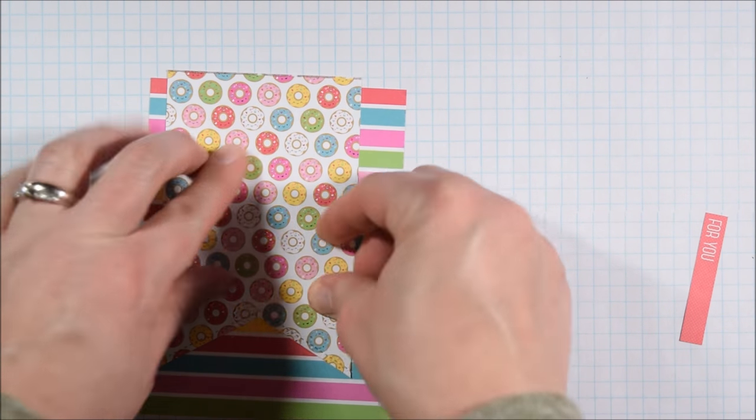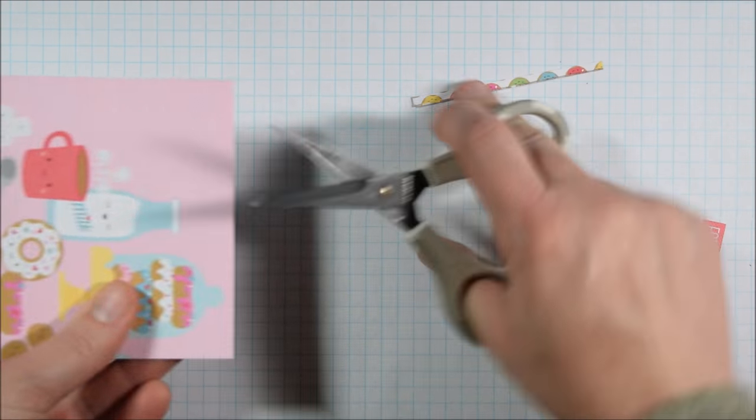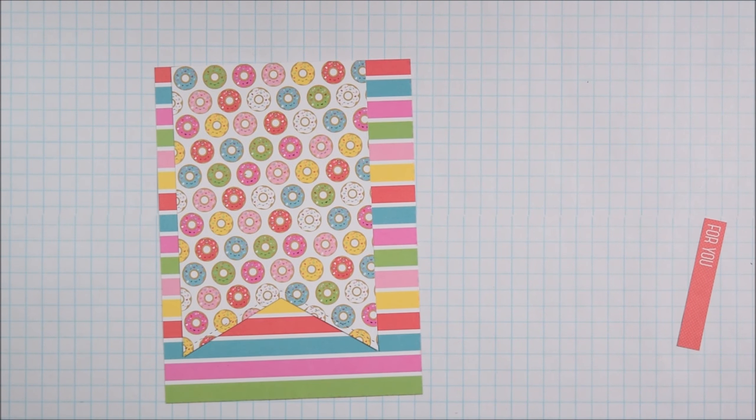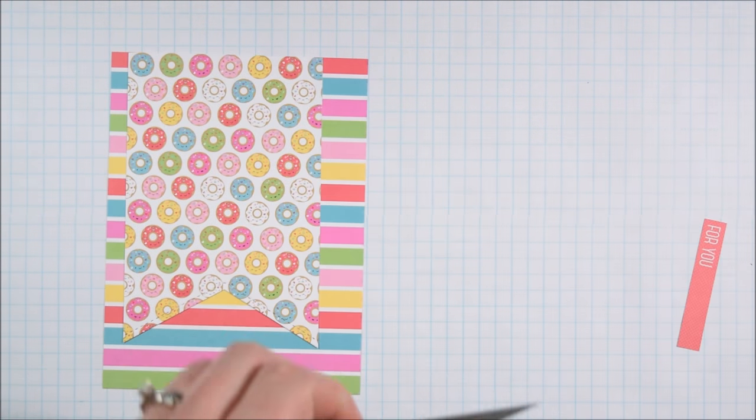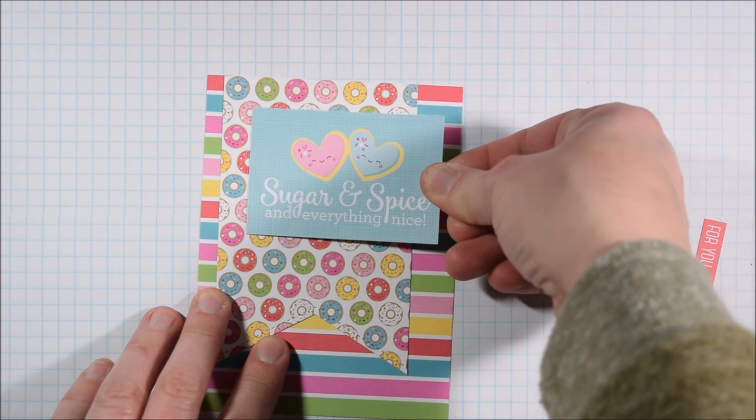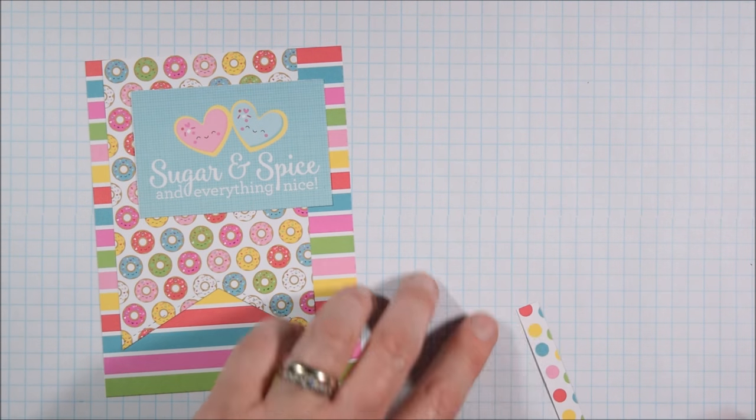Or if you can't find something quite right, then you can go to your stamps. You can have letter stamps that you could spell whatever you need to make the sentiment make more sense. But generally, there's a good number of options in this paper pad that I thought I could make almost any of them work.